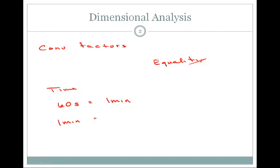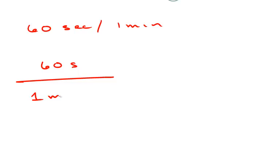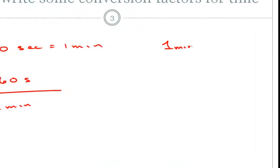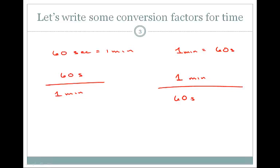We can also say that one minute is equal to 60 seconds — it doesn't matter, they're both equalities. You could technically say 60 seconds per minute. So our first conversion factor is 60 seconds over one minute, and the second is one minute over 60 seconds. Each conversion factor says the same thing but is represented differently, and we can use either one based on what we want to cancel.